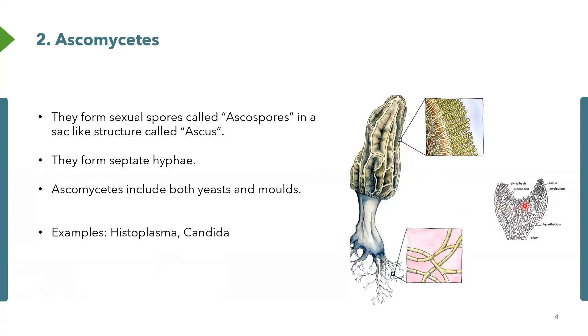Sometimes you might hear it being called a cup-like structure or cup fungi. Classical examples of fungi found in this class include Candida and also Histoplasma.